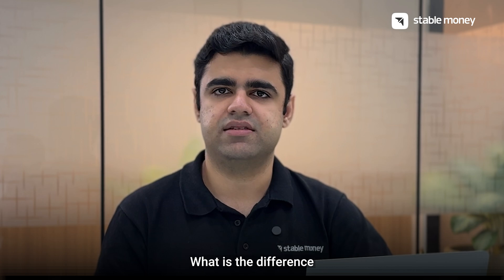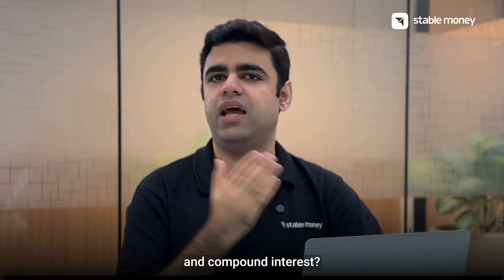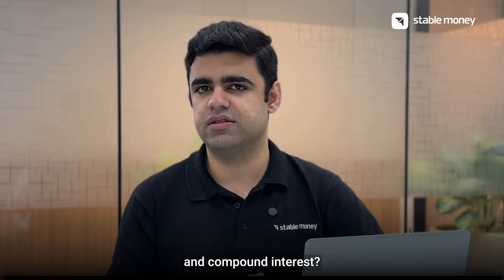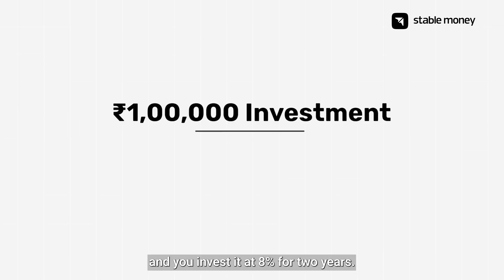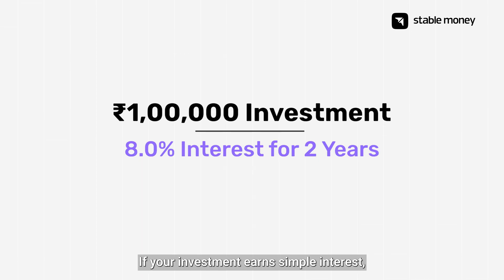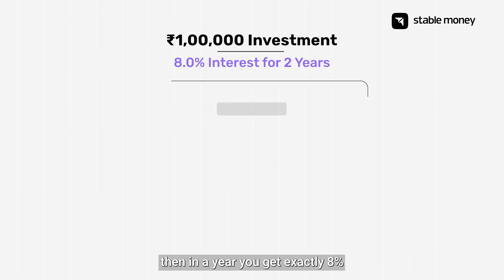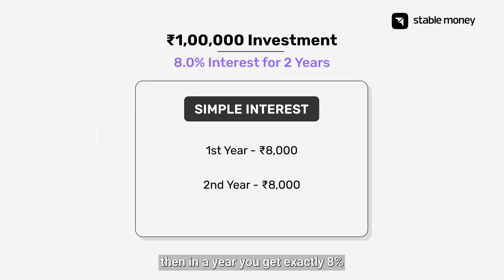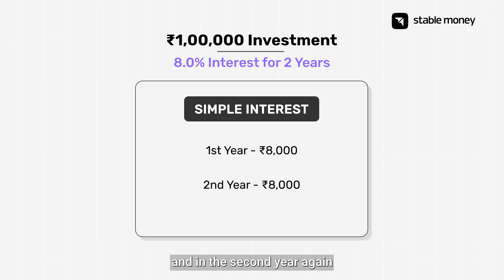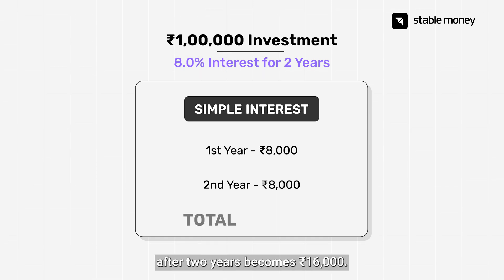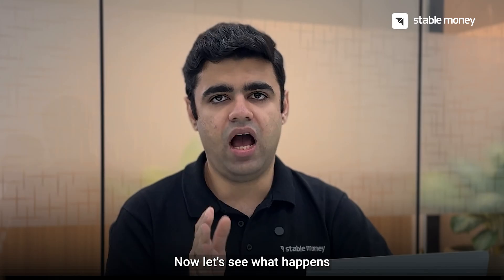Let's start with the basics. What's the difference between simple interest and compound interest? Suppose you have 1 lakh rupees and you invest it at 8% for 2 years. If your investment earns simple interest, then in a year you get exactly 8%, which is 8,000 rupees. And in the second year, again you get 8,000 rupees.